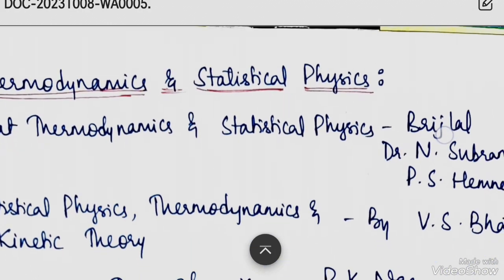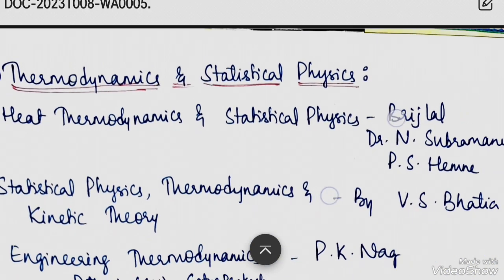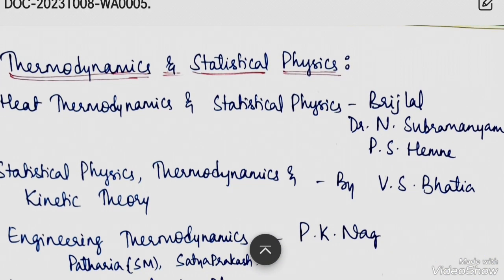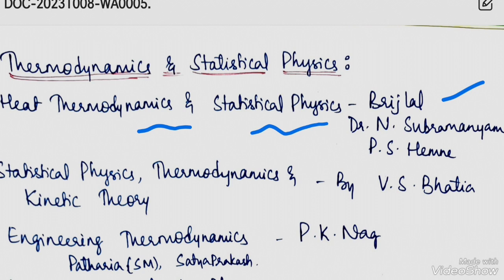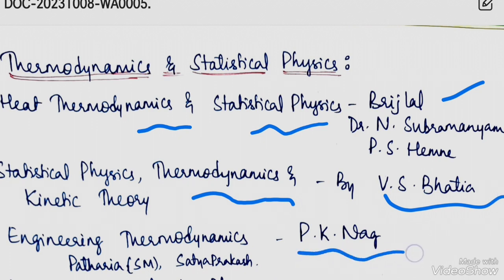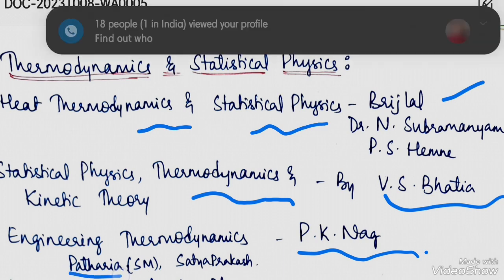The next subject is Thermodynamics and Statistical Physics. The main important and easy book is Heat Thermodynamics and Statistical Physics. Also recommended are Statistical Physics and Thermodynamics and Kinetic Theory, Engineering Thermodynamics, and Statistical Mechanics — all are most important books for this topic.